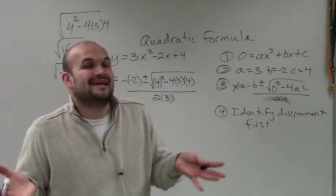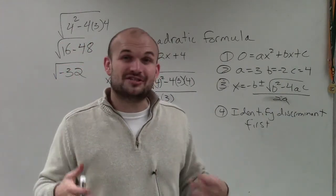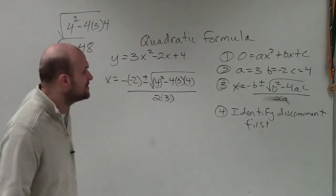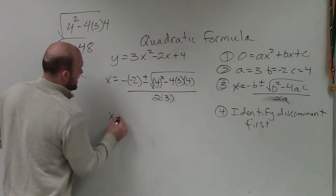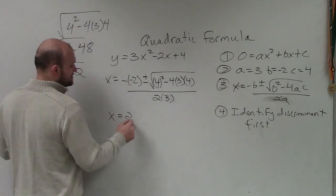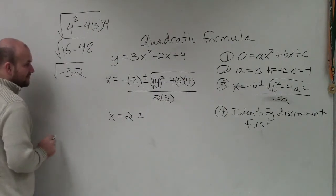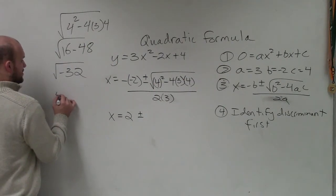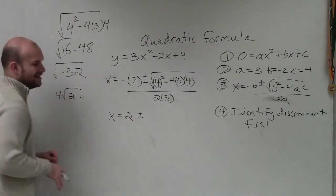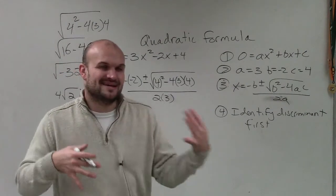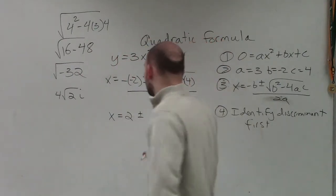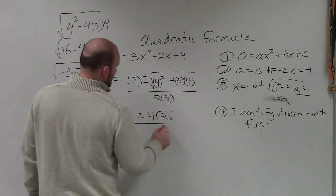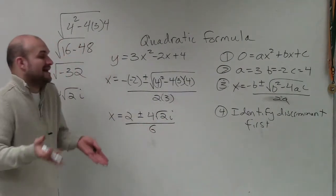Since you can't take the square root of negative 32, there are no real solutions. But I'll continue solving using imaginary numbers. So x equals positive 2 plus or minus the square root of 32, which simplifies to 4 square root of 2i, all divided by 6.